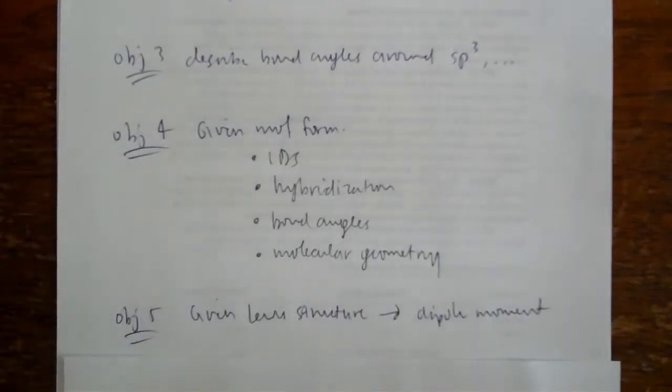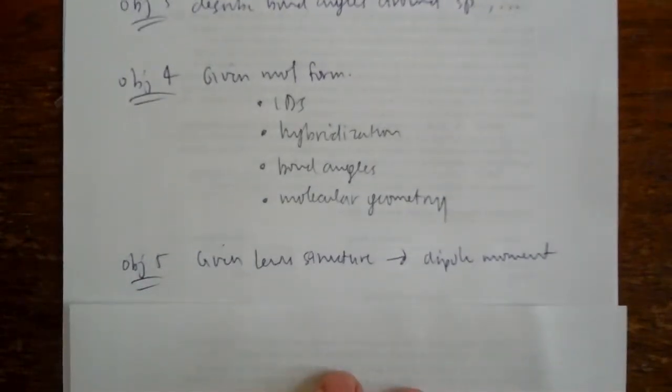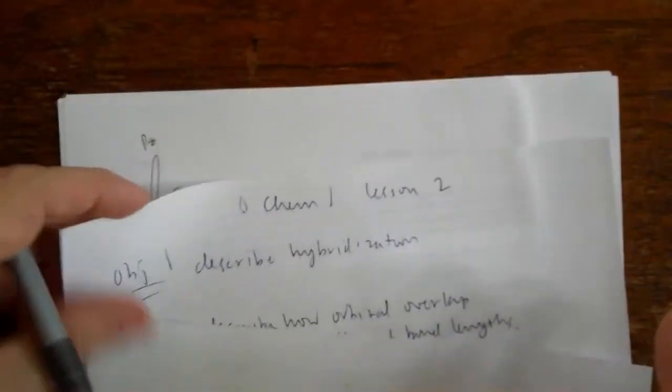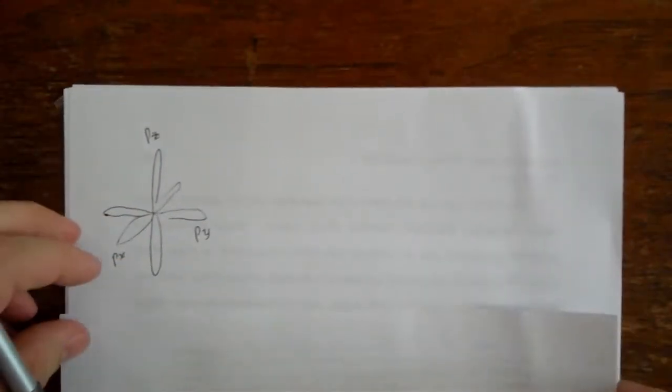And Objective 5 is given a little structure, predict whether or not the structure will have a dipole moment. Okay, so we're going to describe hybridization just a little bit. I've got a pre-drawn picture here.